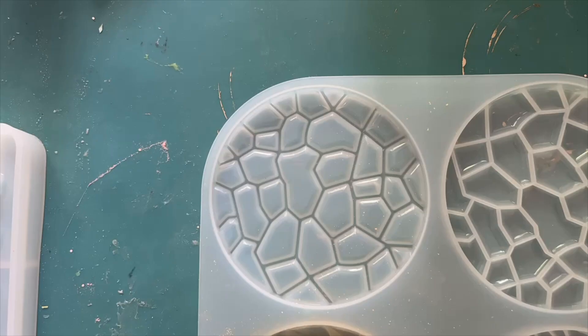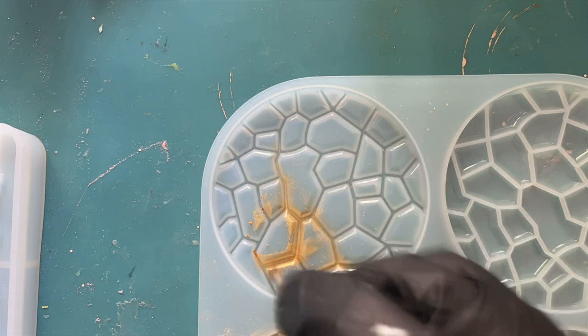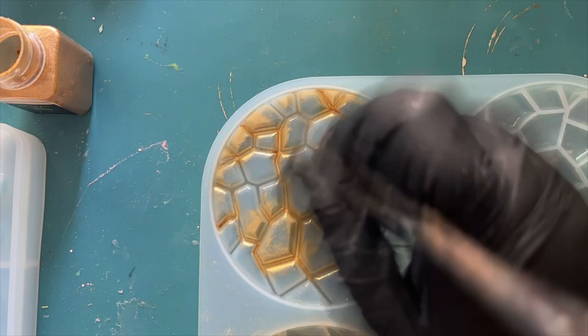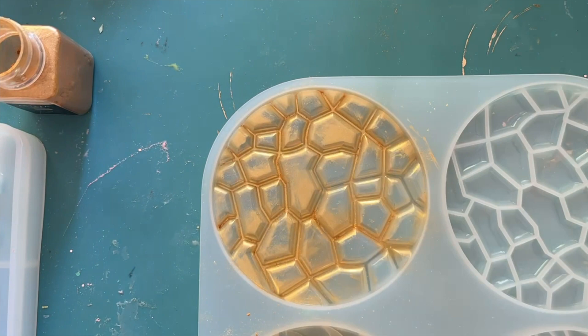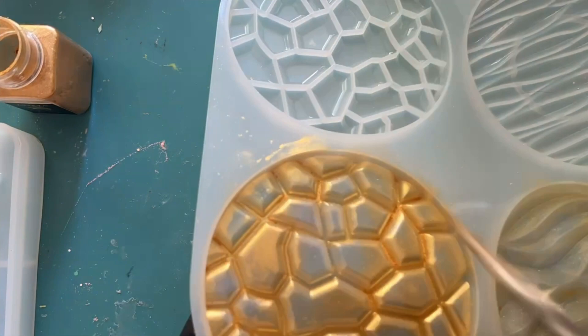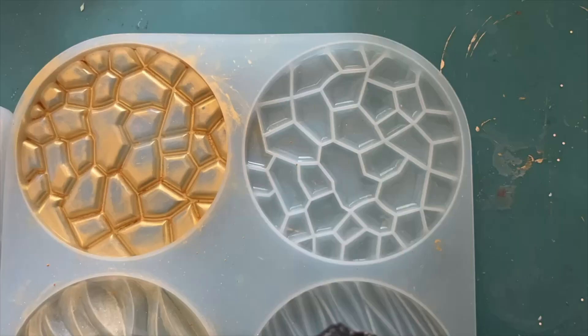Moving on to the next mold, this is a time lapse of me painting the molds with the mica powders. It's picking up all the details, this looks a little bit like maybe an animal skin, although I don't like to think about that too much.